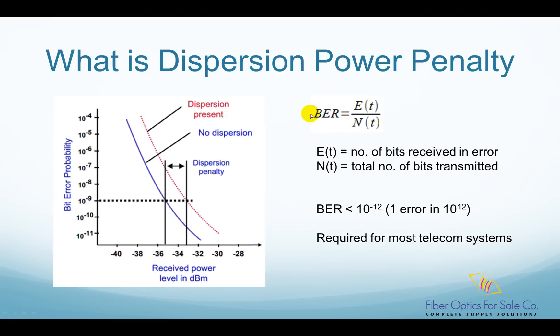Bit error ratio is also called BER. BER is the number of bits received in error divided by the total number of bits transmitted in a given time t. In most long-distance telecom systems, a BER of 10 to the power of minus 12 is required.